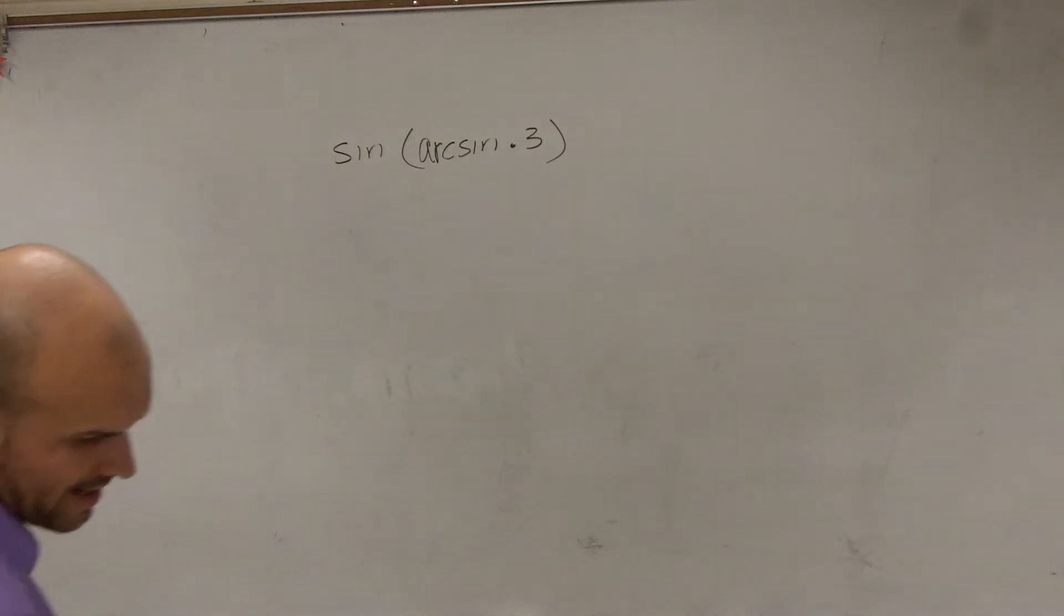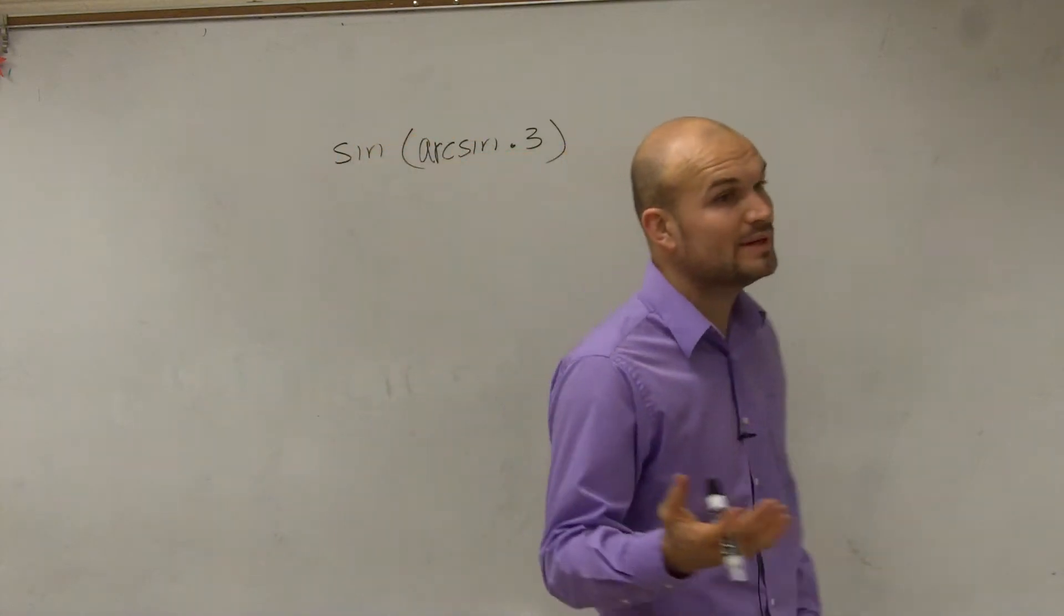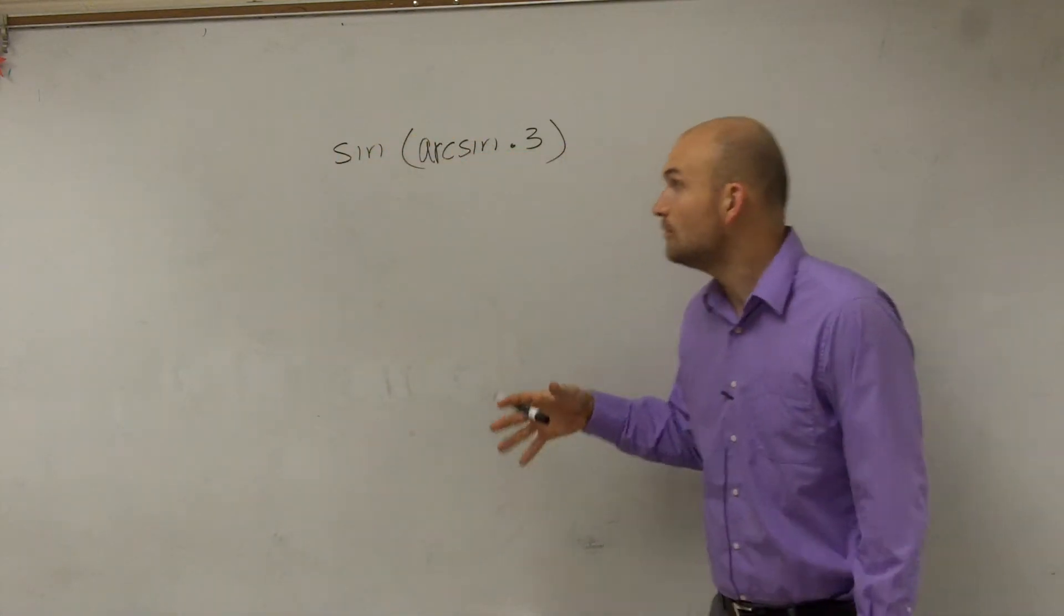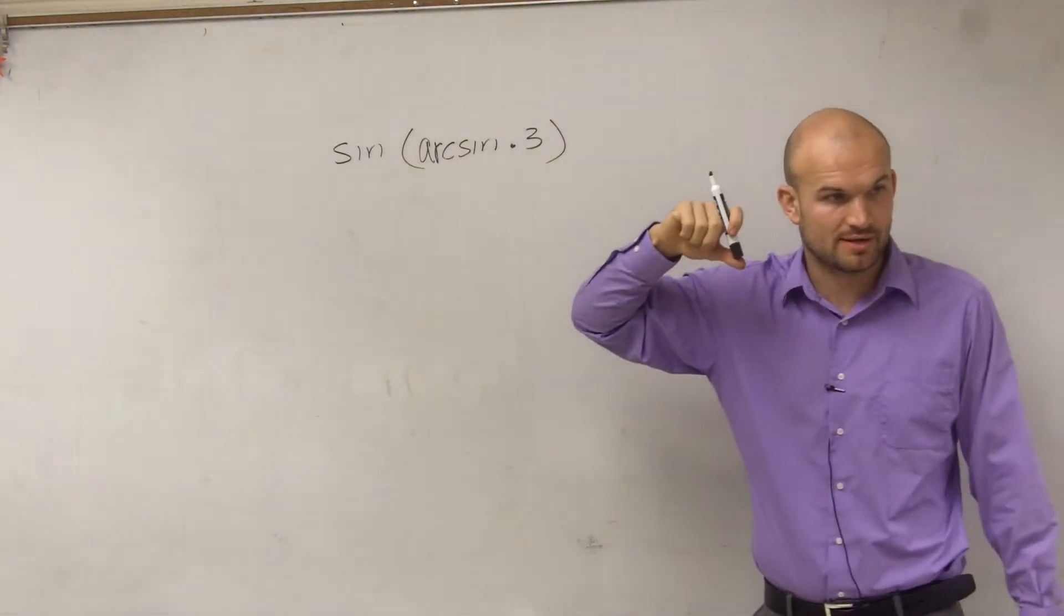OK, so for this problem, what I'm going to do is compare it to the problem we just did. On the last problem, when we did our composition of functions, we took the cosine of 1 and then we took the inverse of that afterwards, right?